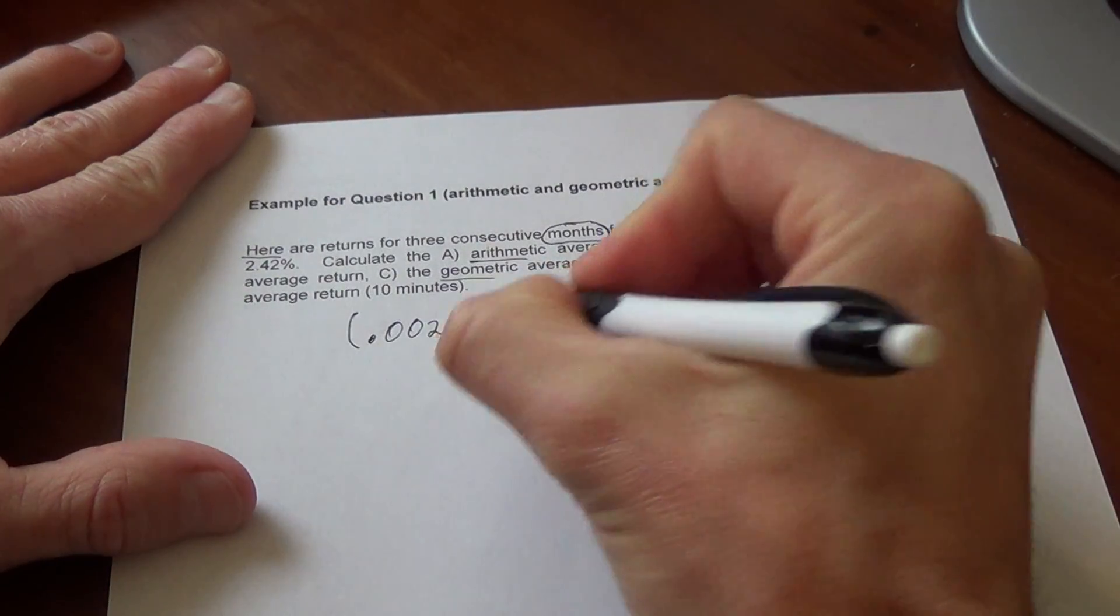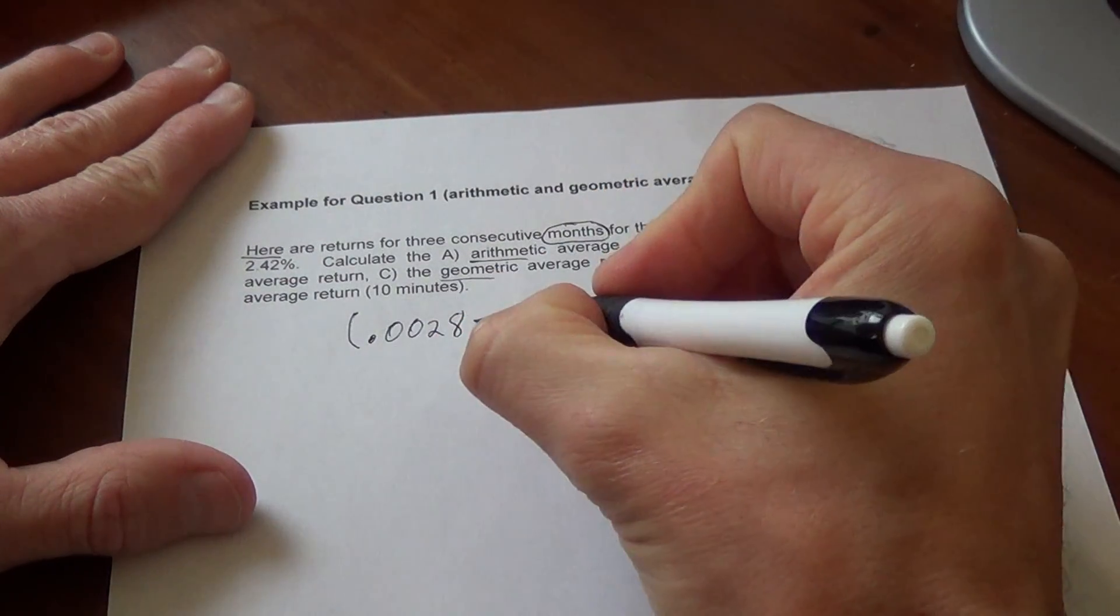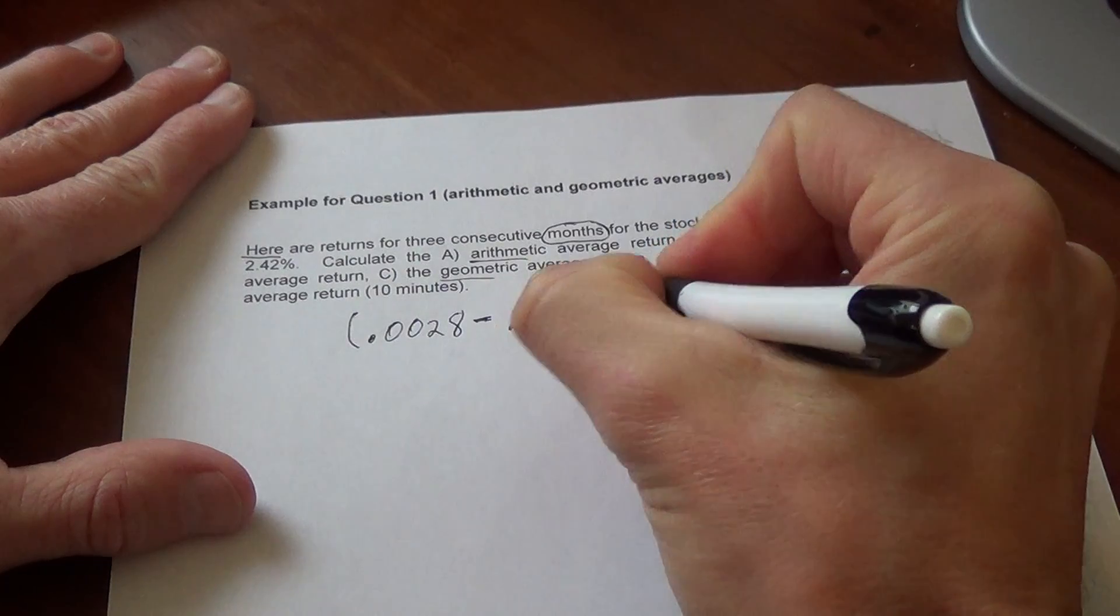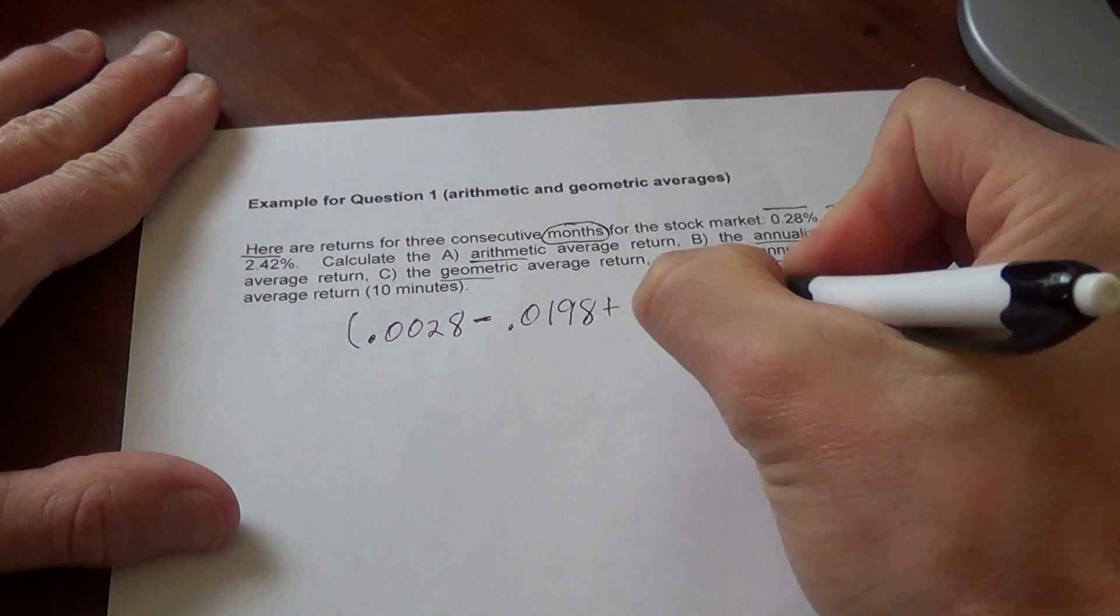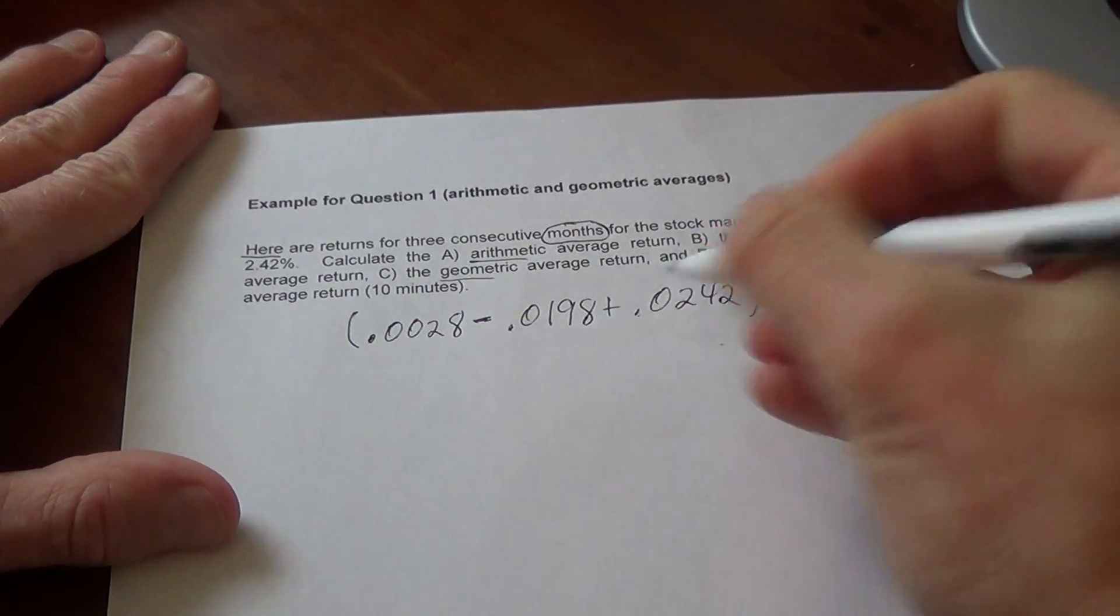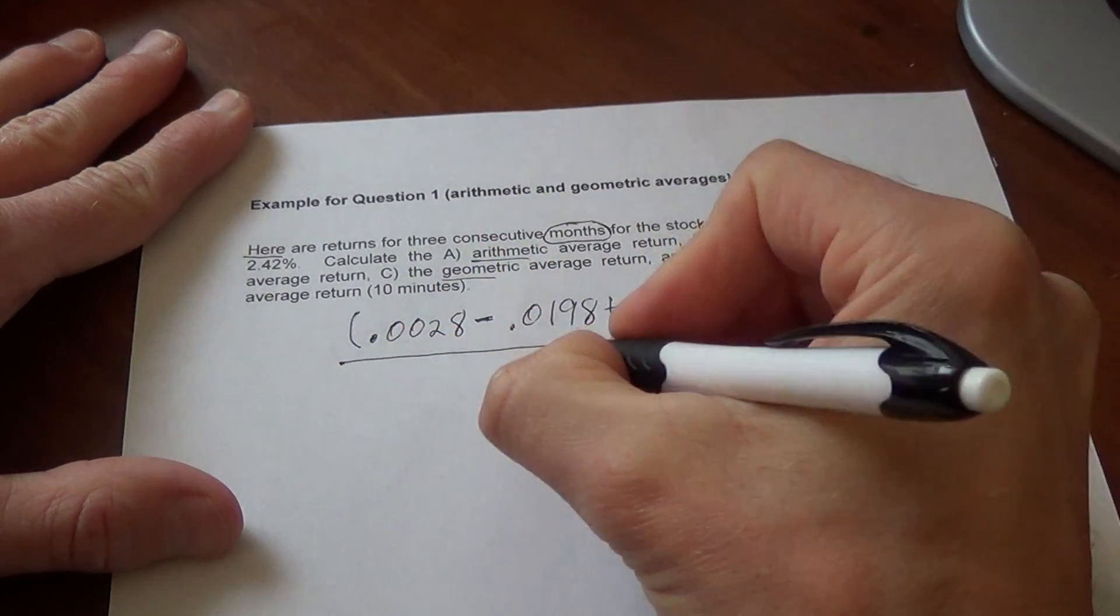The second month, we add that, but since it's a loss, we subtract 0.0198. And in the third month, we're up 0.0242. We take all those, divide by three,